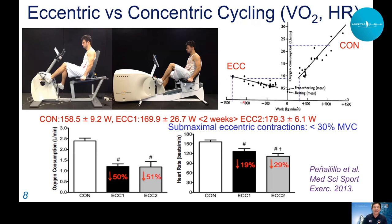In our study comparing eccentric and concentric cycling machines at the same workload of about 160 watts — about 30% of MVC — oxygen consumption was 50% lower during eccentric cycling than concentric, and heart rate was about 20% lower. When the same eccentric cycling was repeated two weeks later, oxygen consumption remained 50% lower and heart rate was 30% lower.